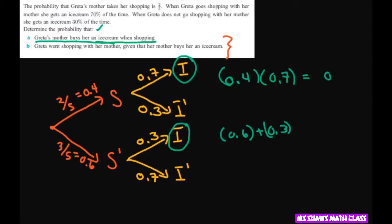This is going to be 0.28 and this one equals 0.18. When you add them up she's going to get ice cream either when going shopping or not going shopping. When you add those two up you get 0.46.